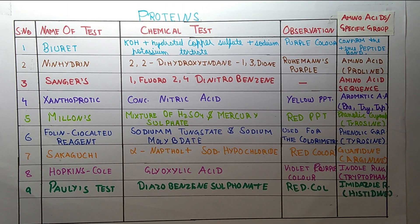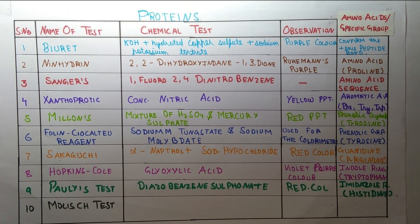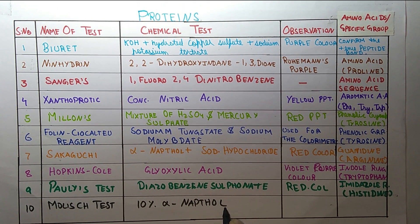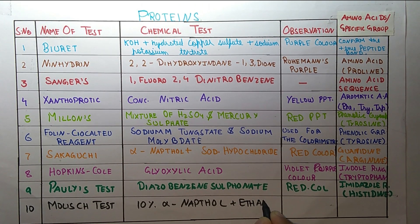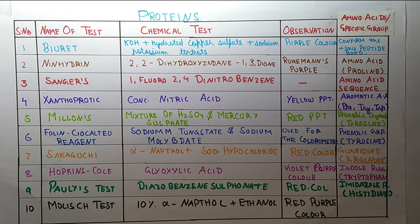The last test for proteins is the Molisch test. In the Molisch test we use 10% alpha-naphthol plus ethanol. The color observed is red-purple. It confirms the presence of glycoprotein.